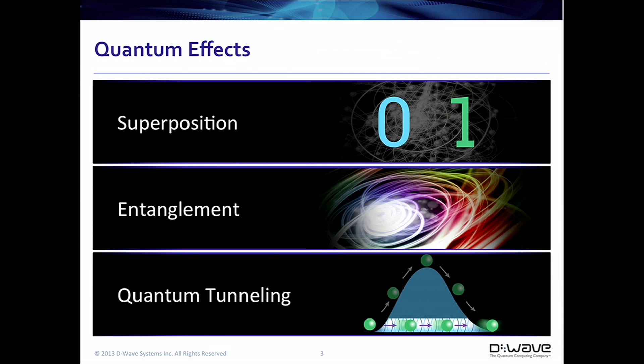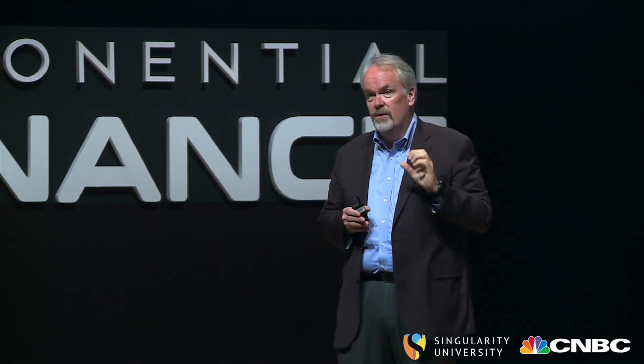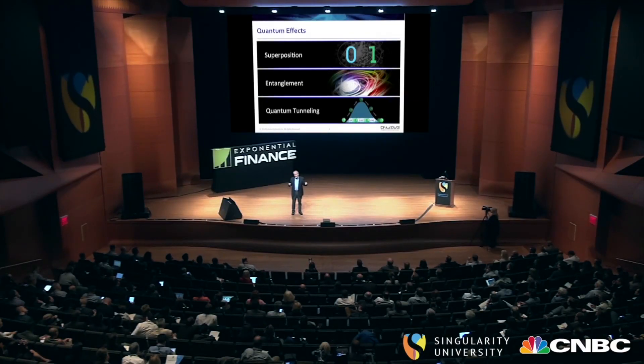There are three effects that are part of any quantum mechanical system or quantum computer. The first is superposition. A qubit has this interesting property that it can be zero and one at the same time — and it's not that it's half in one state and half in the other; it really is in two states at the same time. In fact, many scientists believe it's actually in two universes at the same time. That's kind of an interesting party trick, but it really doesn't do much until you string these qubits together — and that's where the power of the quantum computer comes in.